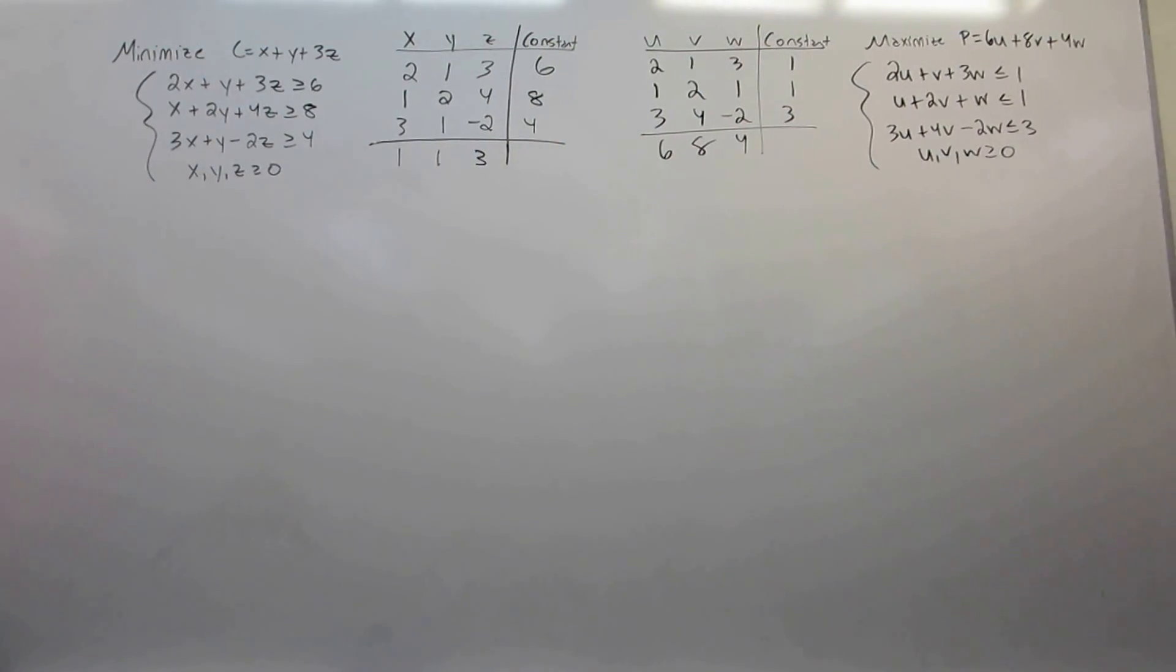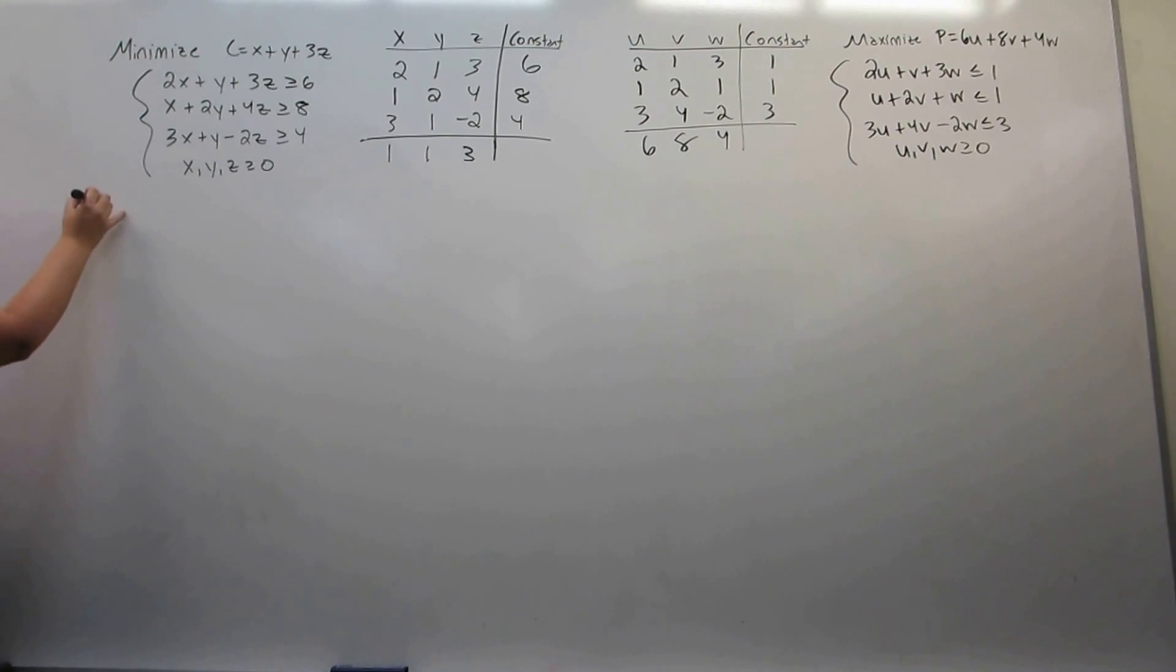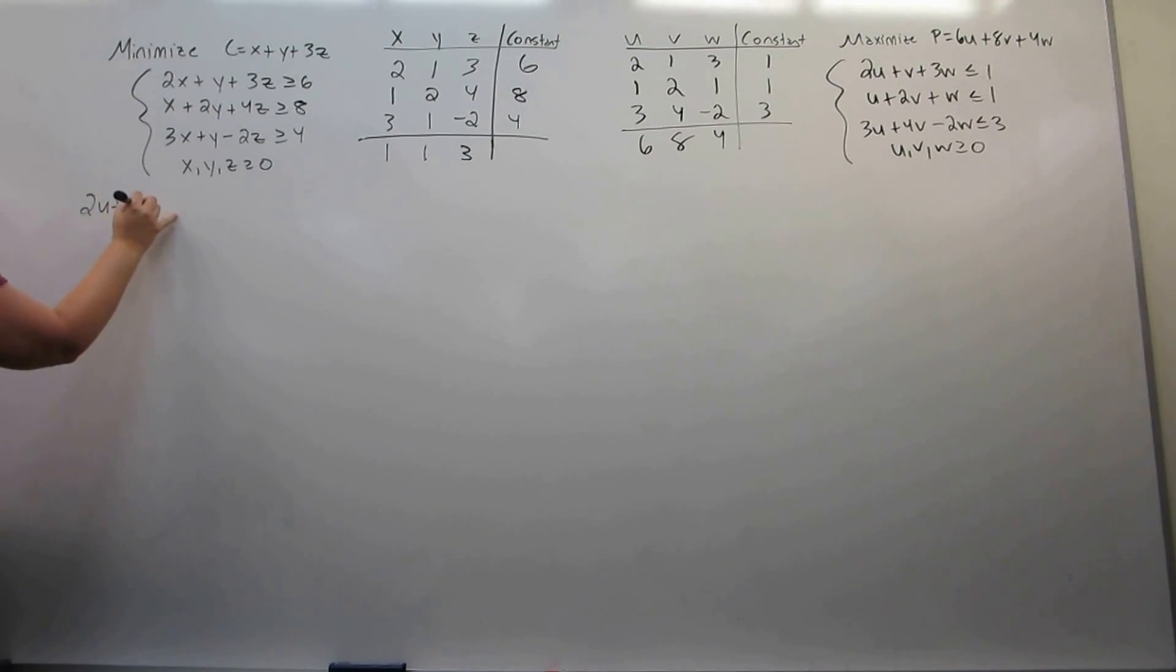Now, in order to solve this, we have to add slack variables in. And the slack variables we are going to add are equal to the variables from the original problem. So we're going to be adding x, y, and z.